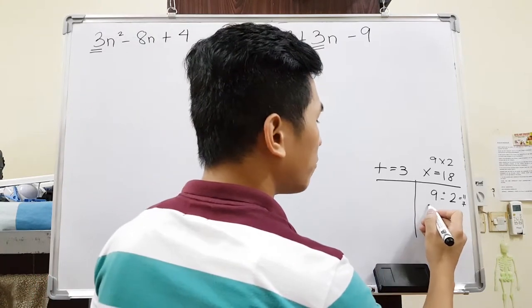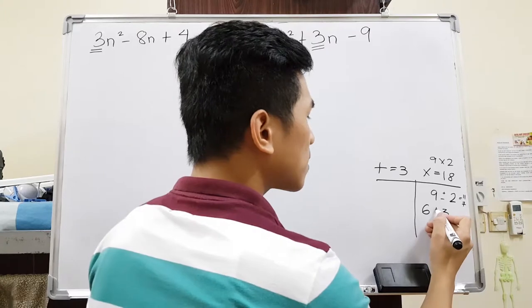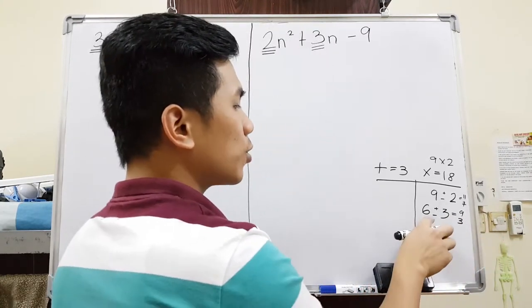So I have to think of some other factors of 18, which is 6 and 3. If I add this, I will get 9. If I minus this, I will get 3. Therefore, I should use 6 and 3.